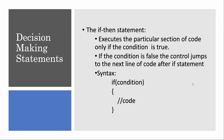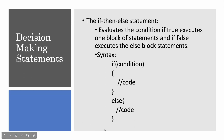The if statement executes a particular section of code only if the condition is true; otherwise, it goes to the next line of code. Suppose if a condition is true, I will execute this code, else I will go to the next line. Now, if I want something to be done when the condition is true and something else when it is false, I will use the if-else block — true condition executes one block, false condition executes another.